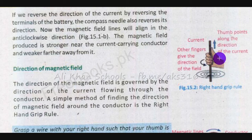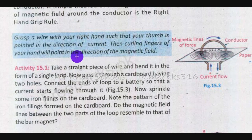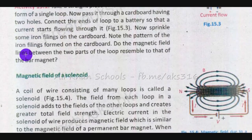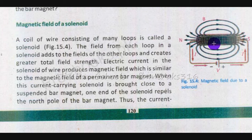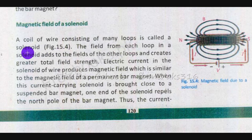A coil of wire consisting of many loops is called a solenoid. The field from each loop in a solenoid adds to the field of the other loops and creates a greater overall magnetic field.